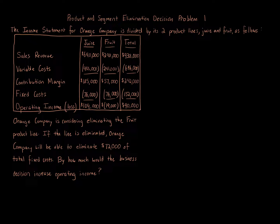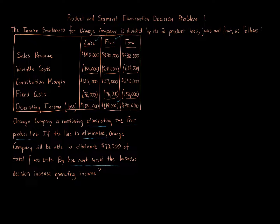This question deals with the elimination of a product line — there are two product lines, juice and fruit. The question asks: if we eliminate the fruit product line, which is currently at a loss, by how much would the decision increase or decrease operating income? Here it specifically says increase operating income, so we know it's leading us that way.